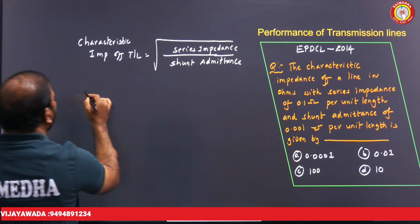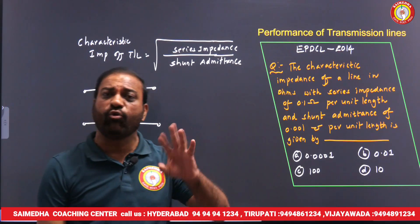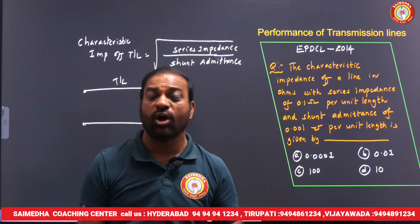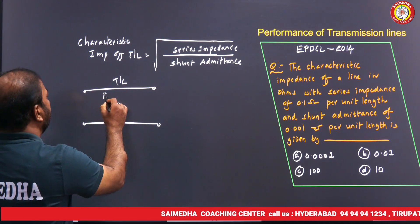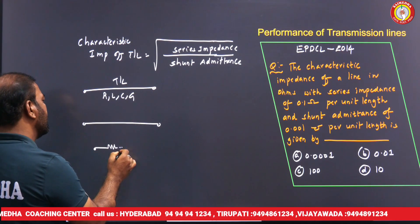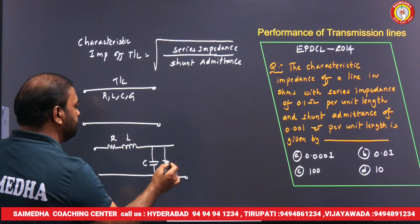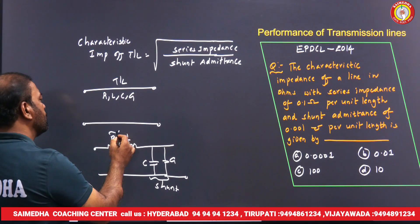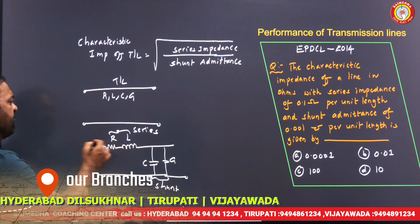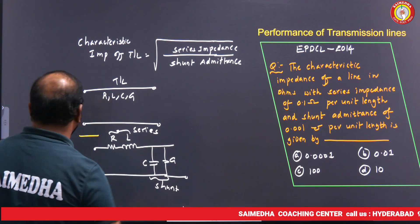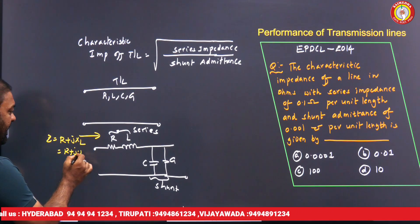A transmission line has four parameters: resistance, inductance, capacitance, and conductance. Out of these, resistance and inductance are series parameters, while capacitance and conductance are shunt parameters. The series parameters form the series impedance Z, and the shunt parameters form the shunt admittance Y.